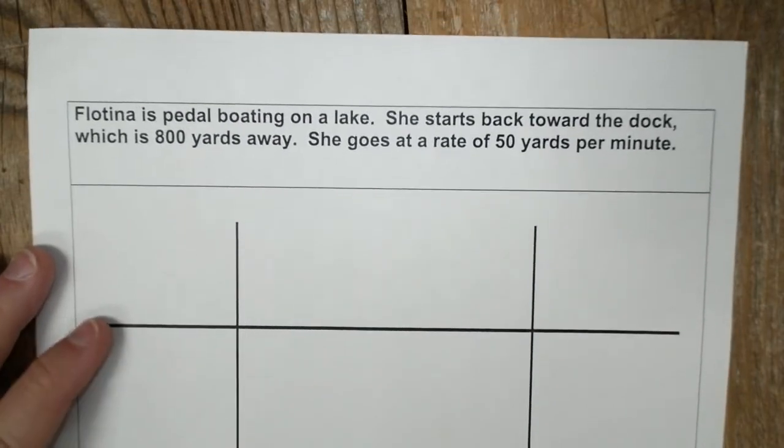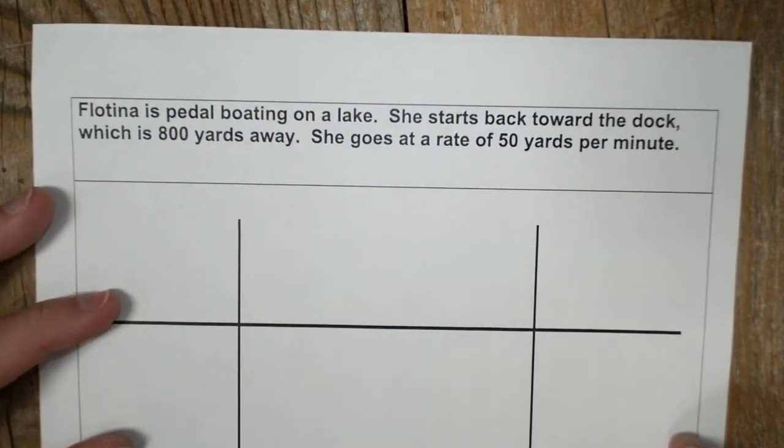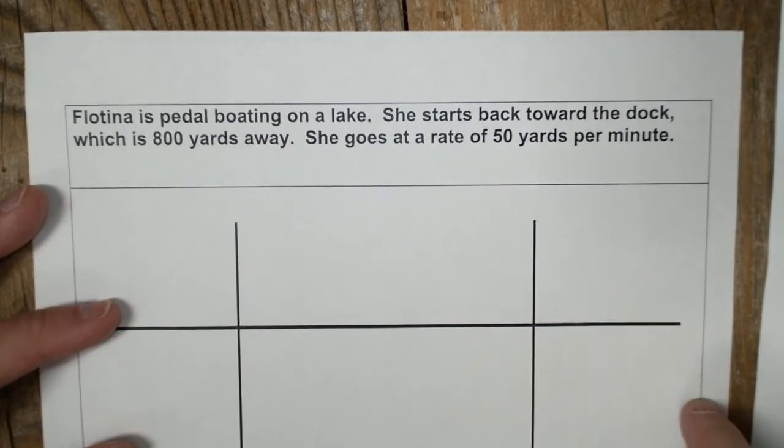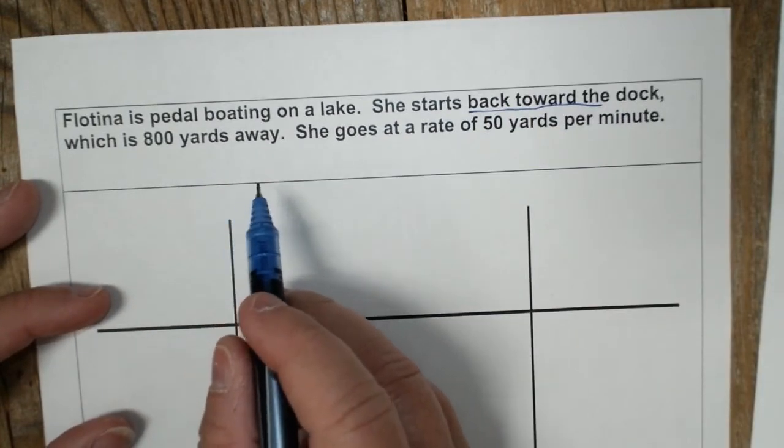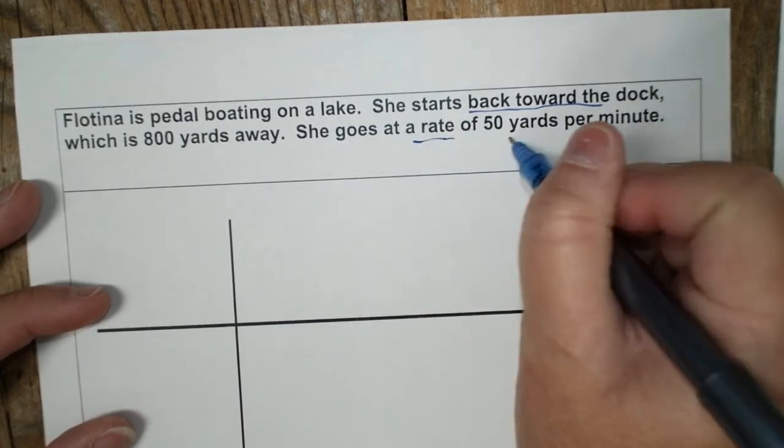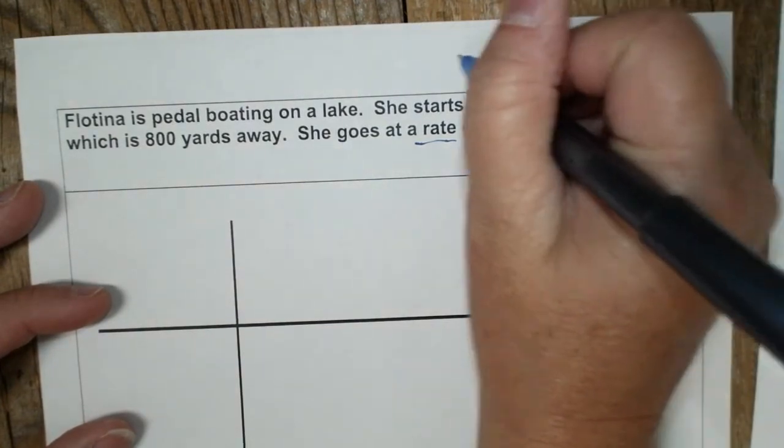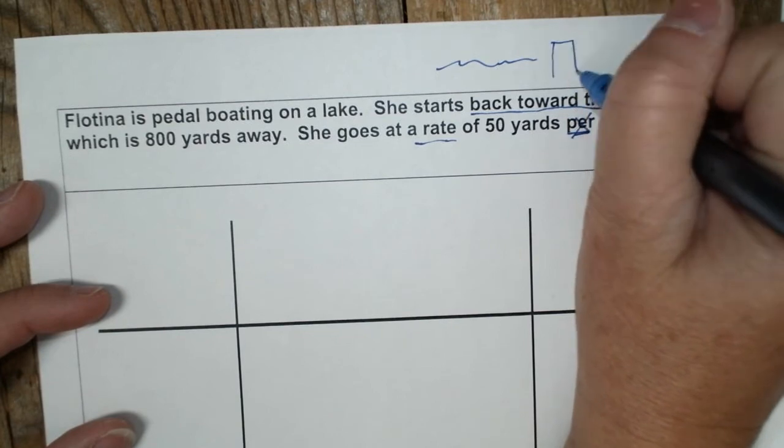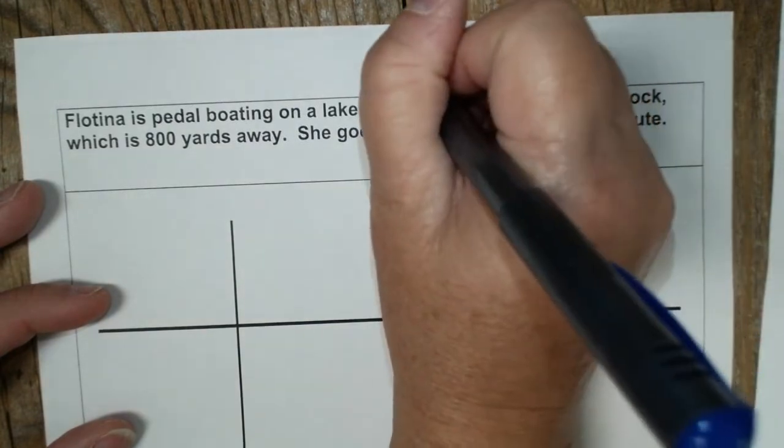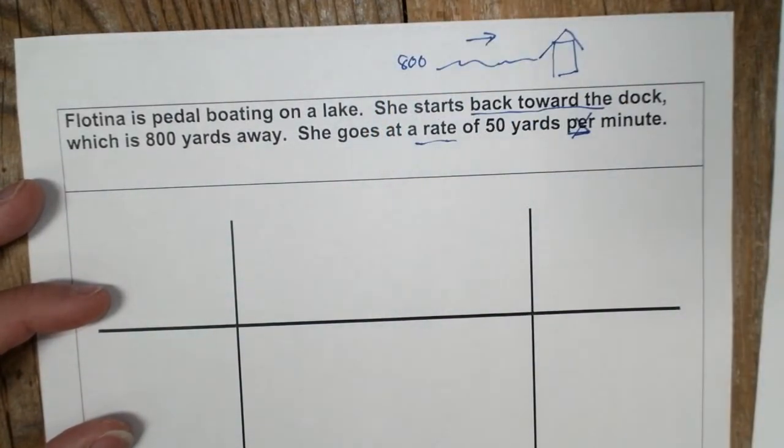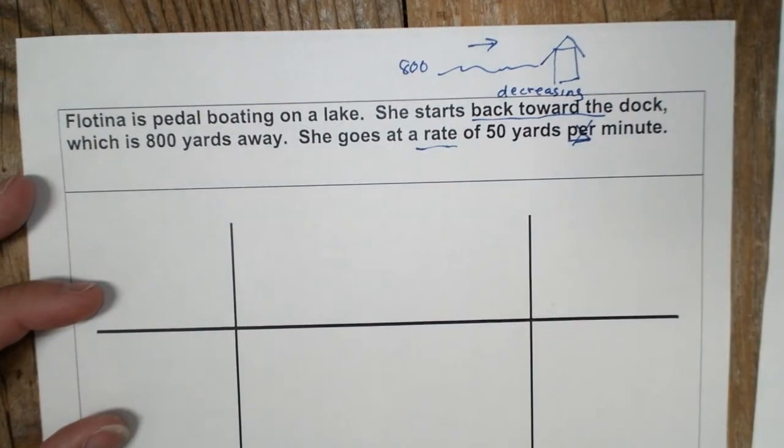Another scenario. And another question is Flotina is pedal boating on a lake. She starts back towards the dock, which is 800 yards away. She goes at the rate of 50 yards per minute. So I'm going to put that. So if I'm, here's my little lake, here's my lake house, and I'm coming back. And she starts 800. That means her distance is decreasing. So back towards is decreasing.